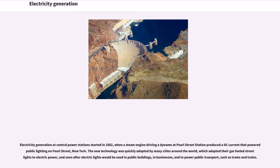Electricity generation at central power stations started in 1882, when a steam engine driving a dynamo at Pearl Street Station produced a DC current that powered public lighting on Pearl Street, New York. The new technology was quickly adopted by many cities around the world, which adapted their gas-fueled street lights to electric power, and soon after electric lights would be used in public buildings, in businesses, and to power public transport such as trams and trains.